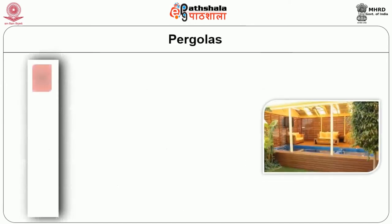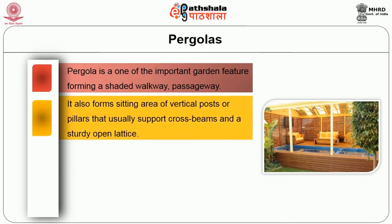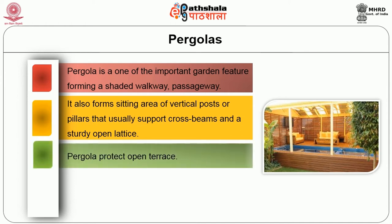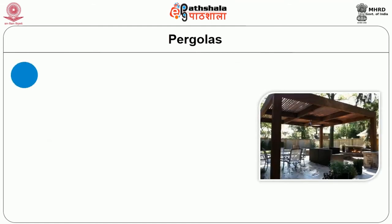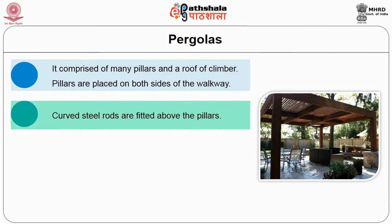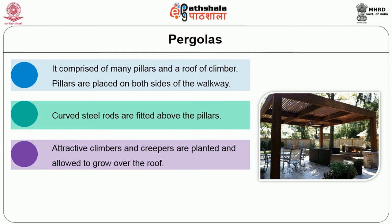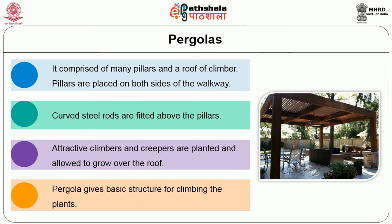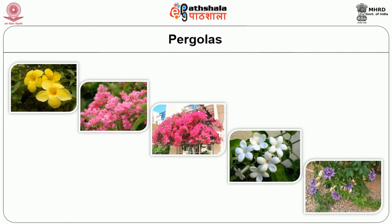Then we will discuss about pergolas. A pergola is one of the important garden features forming a shaded walkway and passageway. It also forms a sitting area of vertical posts or pillars that usually support cross beams and a sturdy open lattice. Pergolas protect an open terrace. A pergola not attached to the home or other structure is called a freestanding pergola; these are mainly used as sitting areas. It comprises many pillars and a roof of climbers. Pillars are placed on both sides of the walkway, and curved steel rods are fitted above the pillars. Attractive climbers and creepers are planted and allowed to grow over the roof. Pergolas give basic structure for climbing plants. Allamanda cathartica, Antigonon leptopus, Bougainvillea, Jasmine and Passiflora are some of the beautiful flowering plants grown on pergolas.